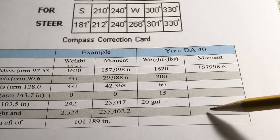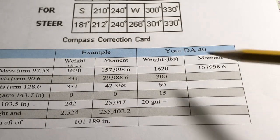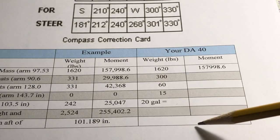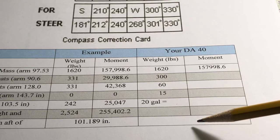From that we need to calculate the moment for each item. Then we'll add up the moments to come up with the total moment, add the total weight, and divide the total moment by the total weight to get the center of gravity. So let's start.